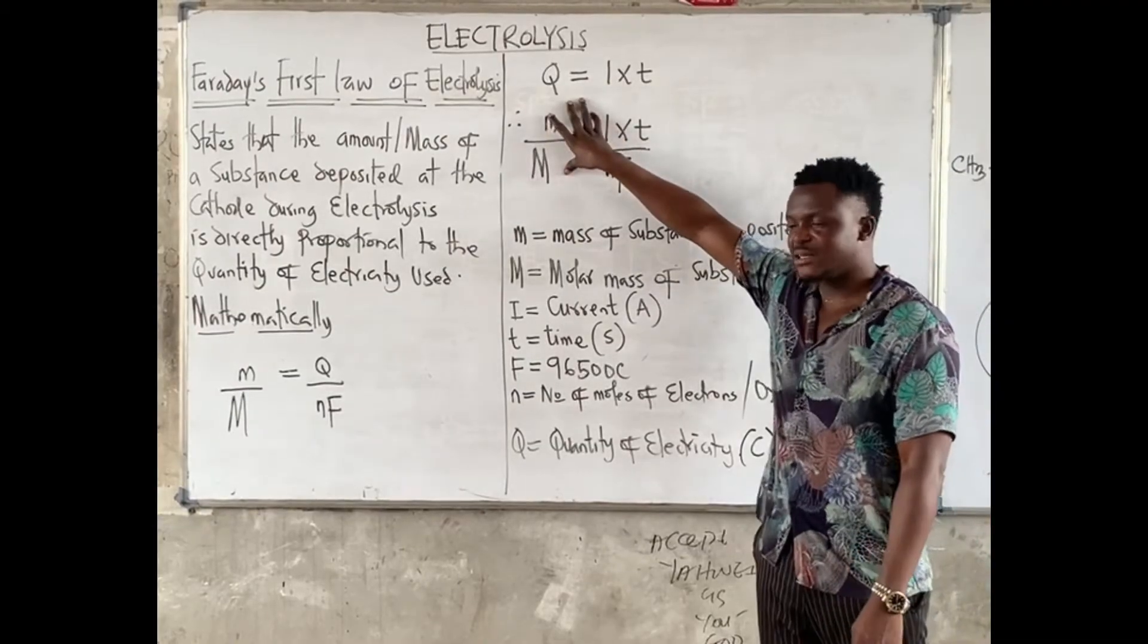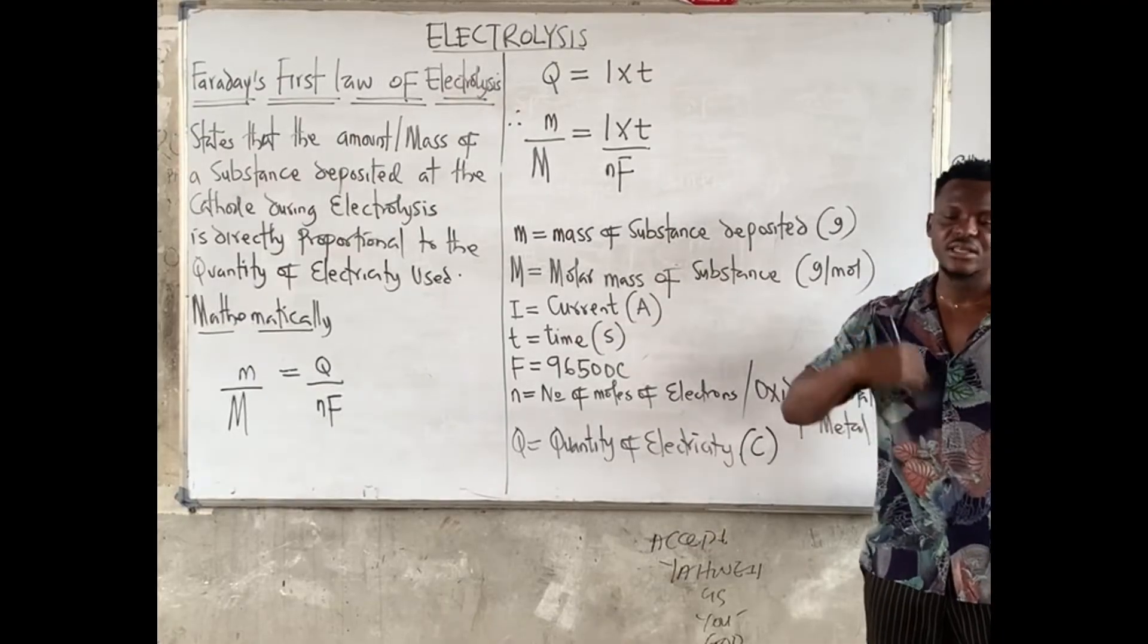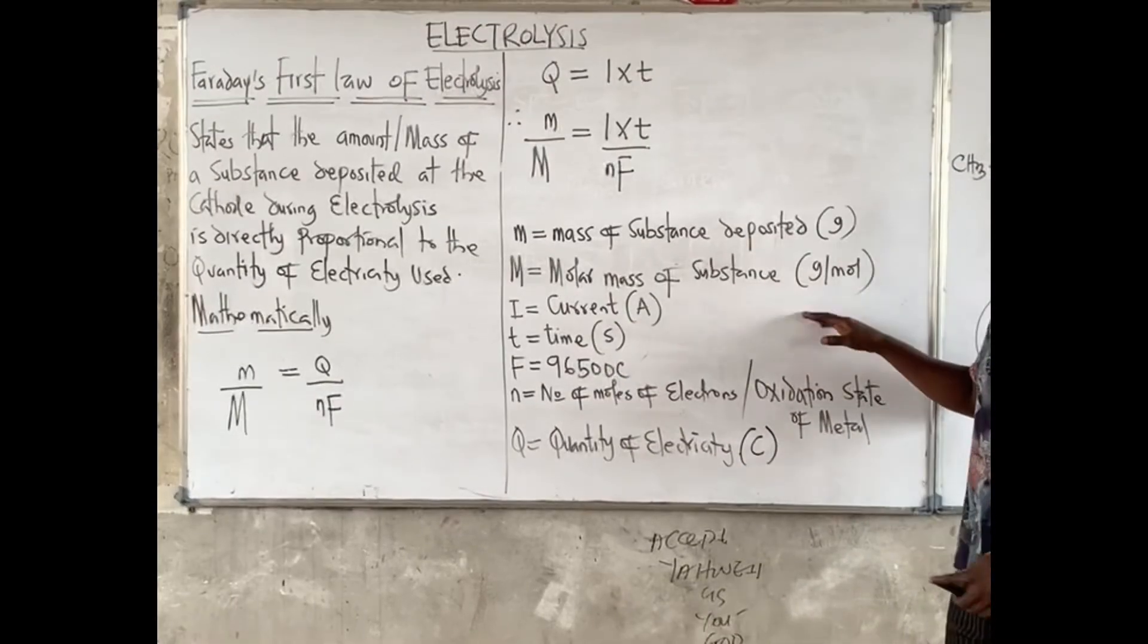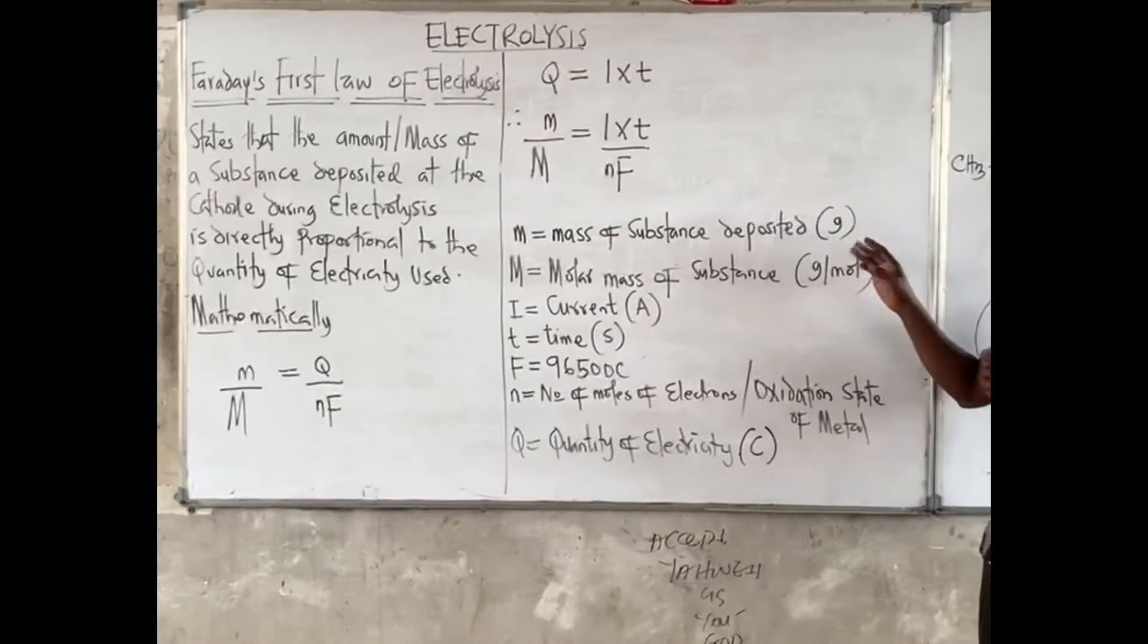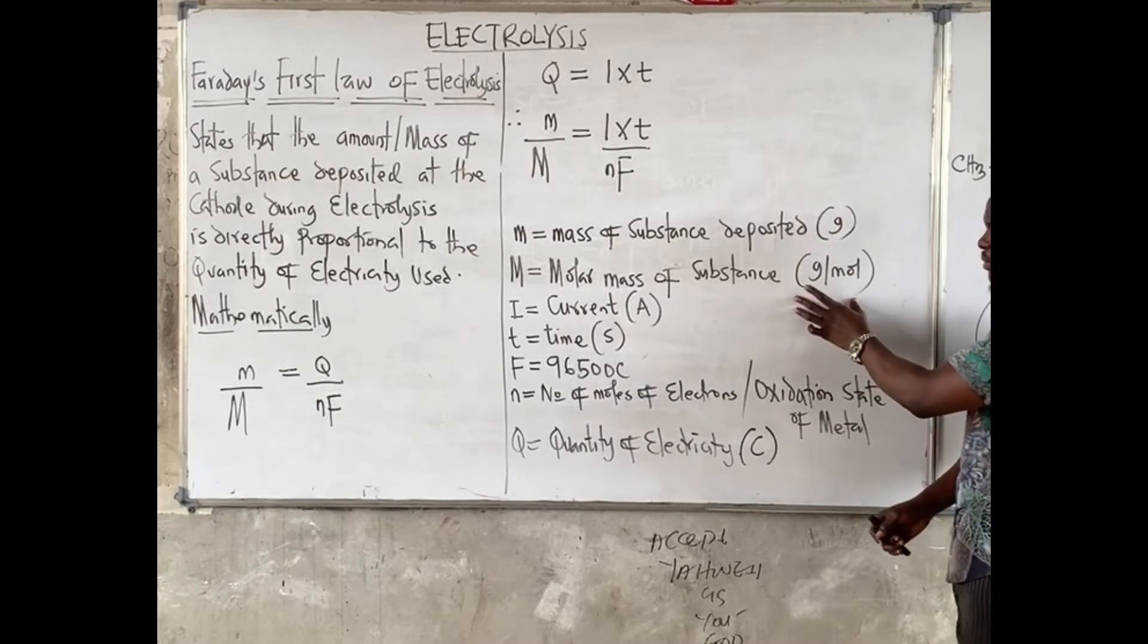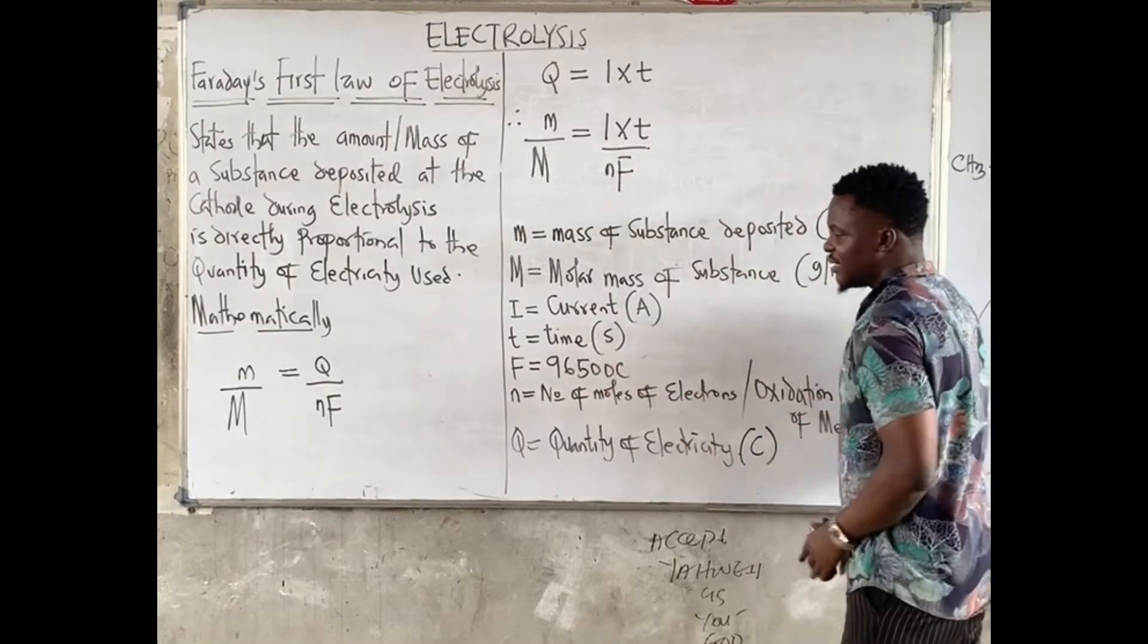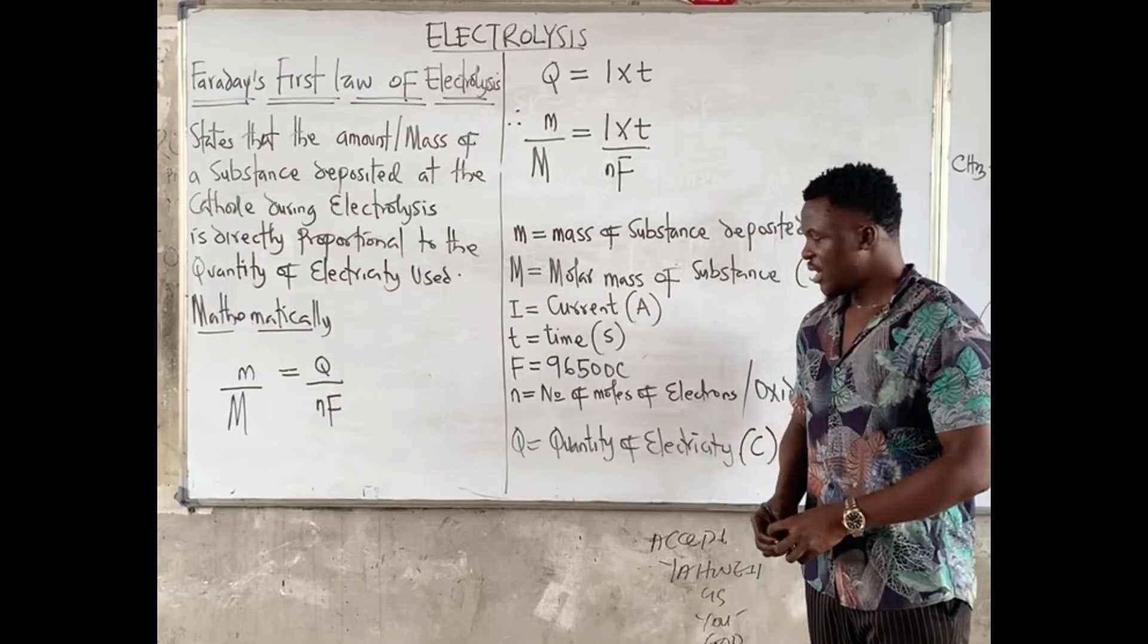So if you substitute I times t here, this formula becomes mass over molar mass equals to current times time all over nF. Now what do these parameters stand for? My m here is mass of the substance in question. M is molar mass of the substance. They all have units. The mass must be in grams. The molar mass must be in grams per mole. The current, which is I, is in amperes. The t is in seconds. This F is a constant, 96500, Faraday's constant.